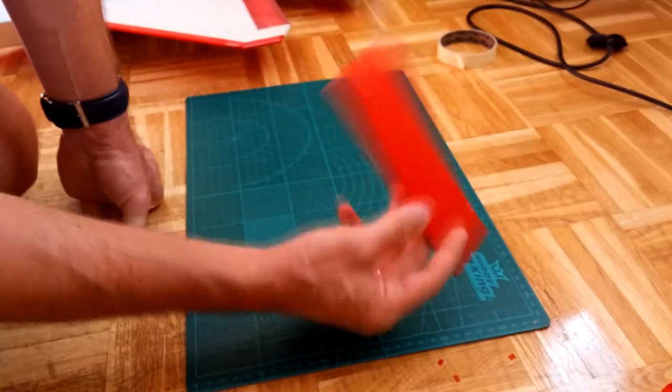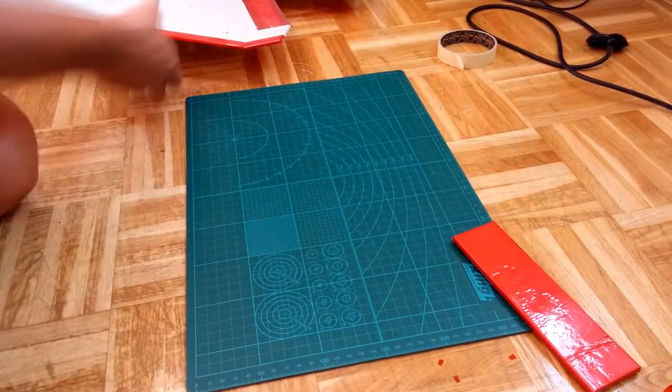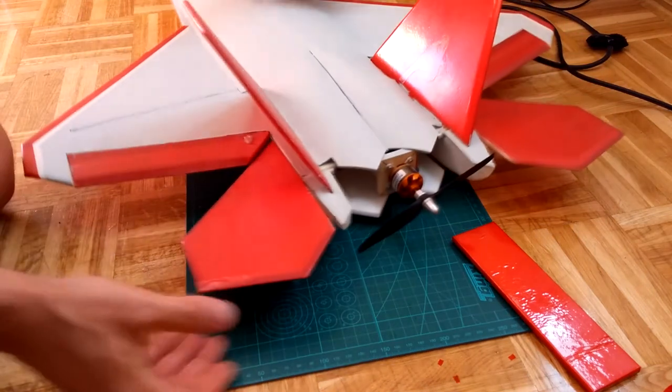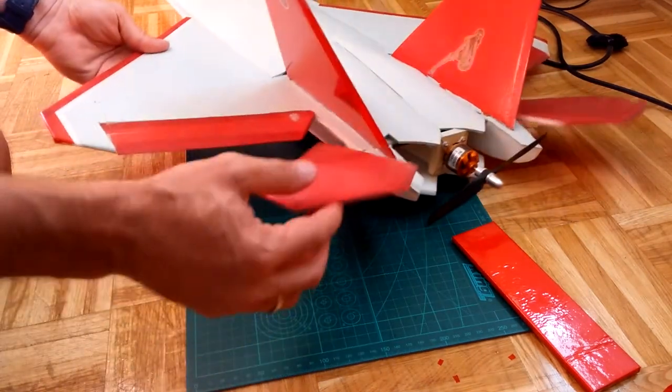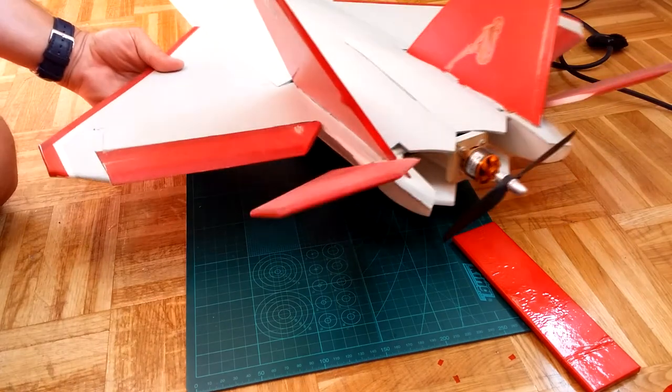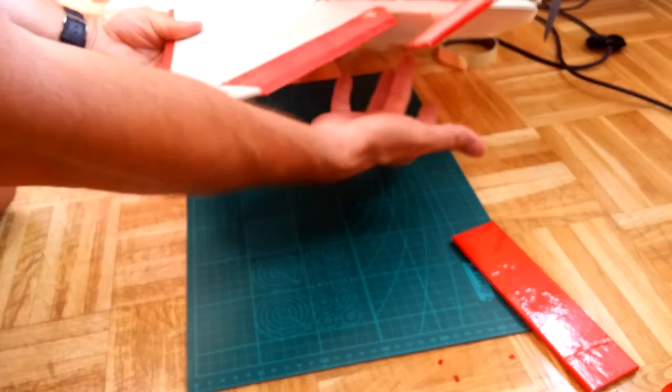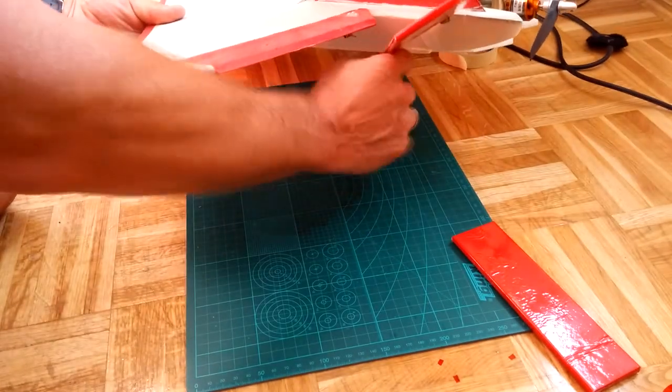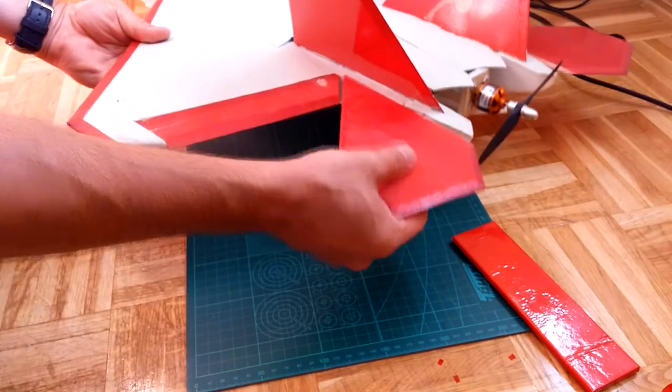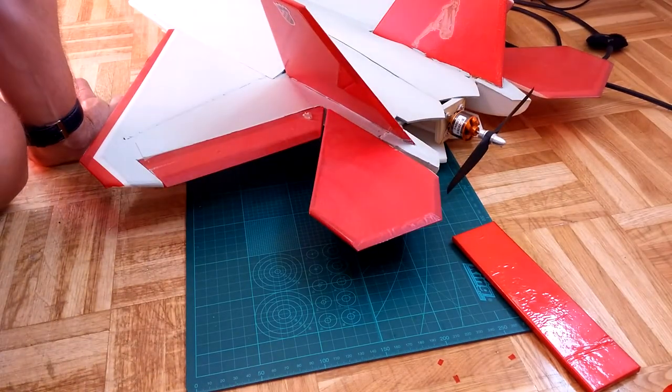And it's good thing when you land or when you have surfaces that are like this one really close. And during landing, usually this elevator is up. And if you catch a high grass or something with this part here, it would break. But when it's covered with covering film, be sure it won't break.